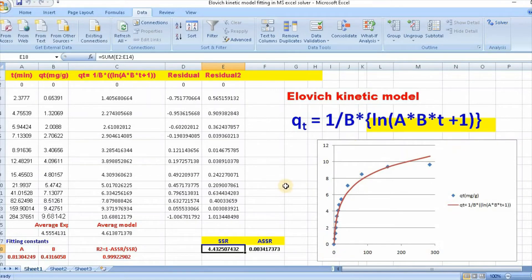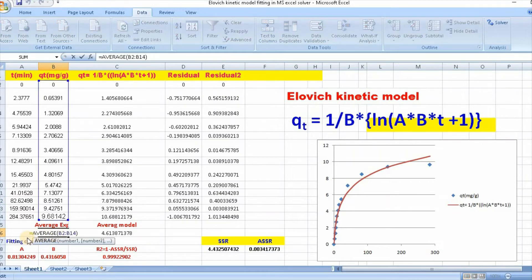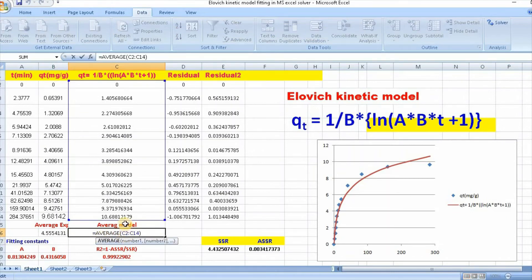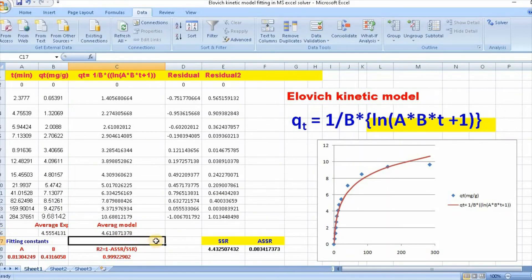Where is our Elovich kinetic model non-linear fitting? Parameters of a and b are this. We need to find out r square value. In order to find out, you need to calculate average experimental which is equal to average, select this and bracket close, then enter. Also, average model, select this and bracket close, then enter.